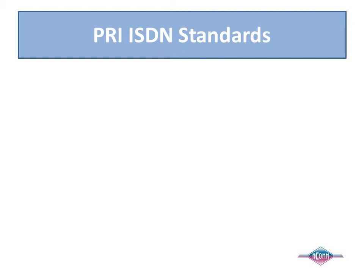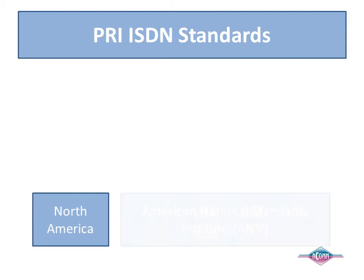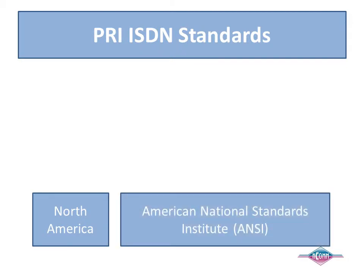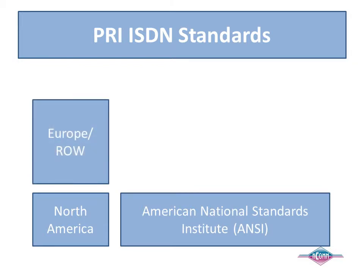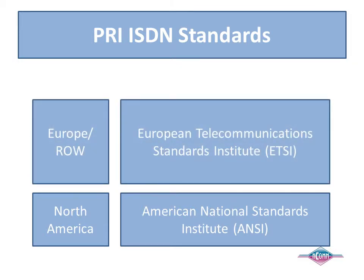ISDN, including Primary Rate ISDN, relies on two sets of standards to ensure equipment and country interoperability. One of these sets covers primarily North America, and the other covers Europe and the rest of the world. North American standards are produced by the American National Standards Institute, or ANSI, and Europe and the rest of the world are covered by standards from the European Telecommunications Standards Institute, or ETSI. We will look at relevant standards from both standards bodies.